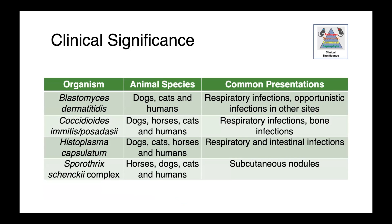As for the types of disease seen with these organisms: Blastomyces is associated with respiratory tract infections and opportunistic infections at other sites, including skin, the central nervous system, and bones. Coccidioides imitis and posadasi cause respiratory tract infections and bone infections in dogs, cats, people, and horses. Histoplasma capsulatum causes respiratory and intestinal infections. The Sporothrix schenckii complex typically causes cutaneous infections, with subcutaneous nodules occurring along lymphatics in a wide variety of species.